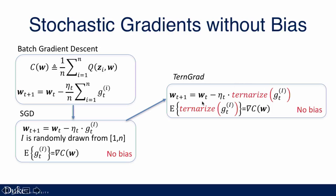If so, why don't we just randomly ternarize the stochastic gradient but keep the expectation of the ternary gradient the same as the original floating gradient? In this way we can still get an unbiased gradient approximation.